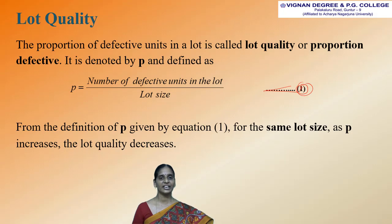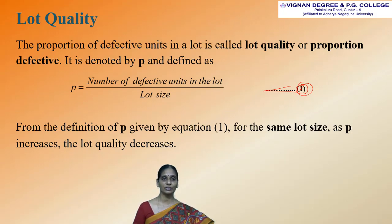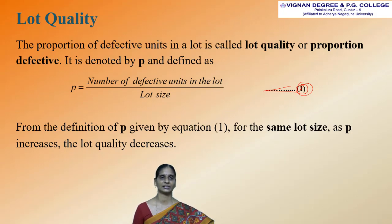From the definition of p — that is, lot quality — given by equation 1, you should know that for the same lot size, as the value of p increases, the lot quality decreases.